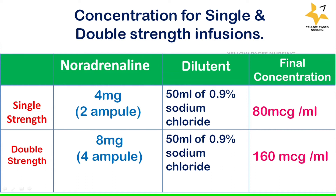For single strength infusion, we take 2 ampoules of noradrenaline containing 4 mg, diluted in 50 ml of sodium chloride, giving a final concentration of 80 micrograms per ml. For double strength, we take 4 ampoules containing 8 mg, diluted in 50 ml of sodium chloride, giving a final concentration of 160 micrograms per ml.